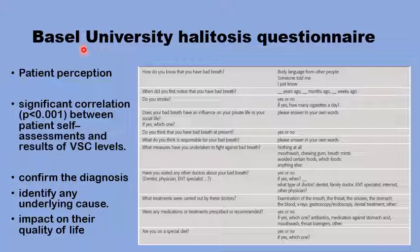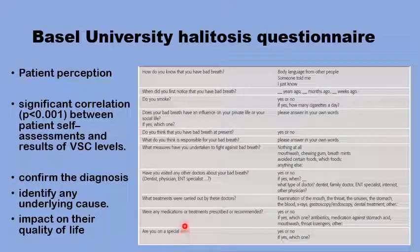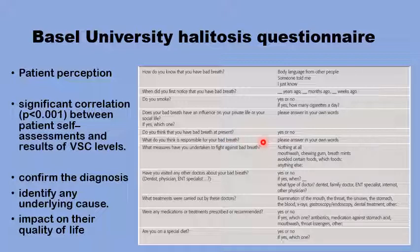This questionnaire from the Basel University Halitosis questionnaire includes 11 questions covering areas like how and when the patient came to notice a problem with bad breath, and if this had any impact on their life or behavior. Does the patient smoke or have any special diet or medications? What steps had the patient taken to improve their condition, including oral hygiene, mouth washing, and tooth brushing? Whether the patient had sought medical help, is on any specific treatment, and whether the patient agrees that they have a problem with bad breath.